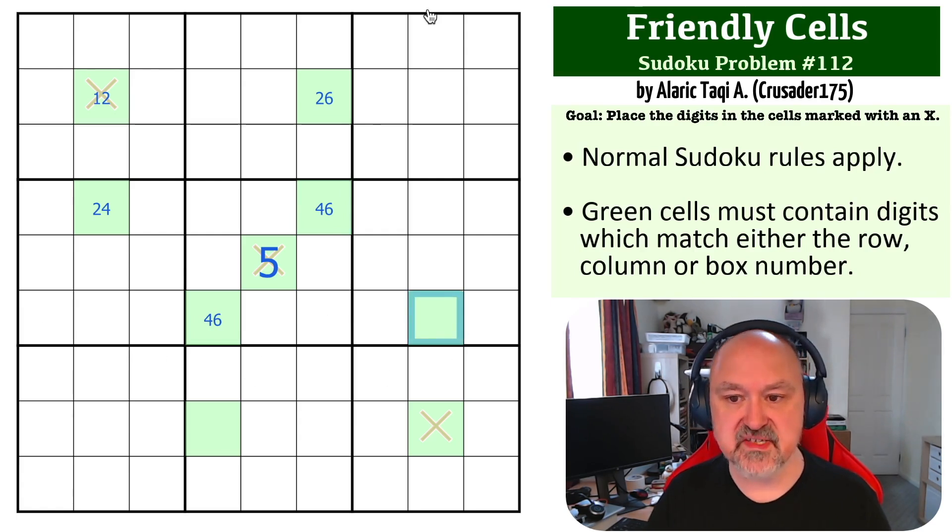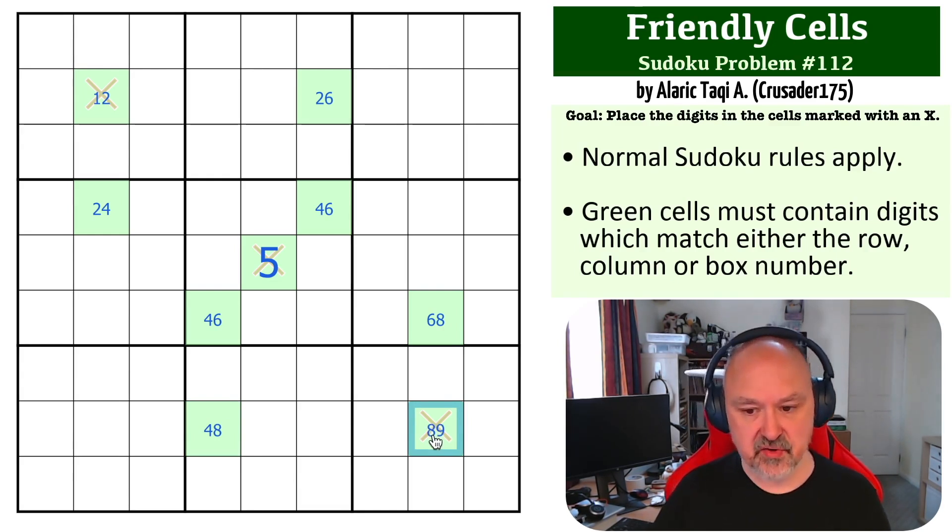This cell is in row 6, column 8 and box 6, so it's 6 or 8. This is in box 8, row 8, so we get an 8, but it's also in column 4. And this is in row and column 8 but it's in box 9, so this is 8 or 9. So we get this disposition of cells.